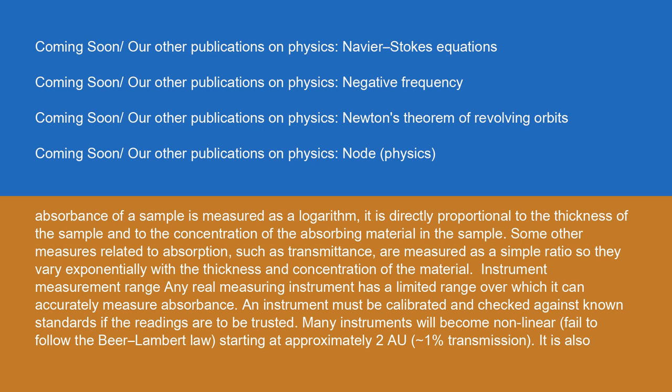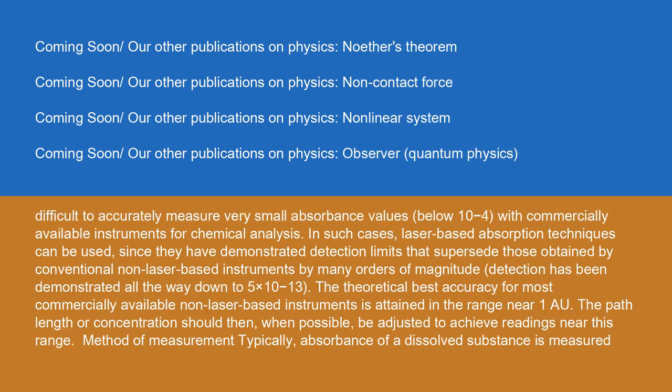Any real measuring instrument has a limited range over which it can accurately measure absorbance. An instrument must be calibrated and checked against known standards if the readings are to be trusted. Many instruments will become non-linear — failing to follow the Beer-Lambert Law — starting at approximately 2 AU (1% transmission). It is also difficult to accurately measure very small absorbance values below 10⁻⁴ with commercially available instruments. In such cases, laser-based absorption techniques can be used, since they have demonstrated detection limits that supersede those of conventional non-laser-based instruments by many orders of magnitude, with detection demonstrated down to 5 × 10⁻¹³. The theoretical best accuracy for most commercially available non-laser-based instruments is attained near 1 AU, and path length or concentration should be adjusted to achieve readings near this range.